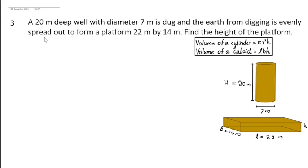Dear students, welcome to your math guide. This is question number 3, exercise 13.3. A 20 meter deep well with diameter 7 meter is dug, and the earth from digging is evenly spread out to form a platform 22 meter by 14 meter. Find the height of the platform.